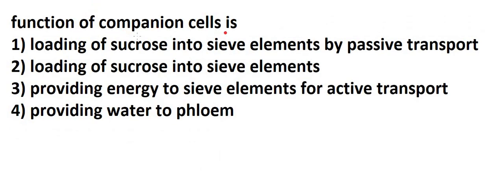Next question: what is the function of the companion cell? The four options include: loading of sucrose into sieve element by passive transport; providing energy to sieve element for active transport; and providing water to phloem. The main function of the companion cell is to maintain pressure gradient in the sieve element — loading sucrose into the sieve element. The correct answer is option 2.